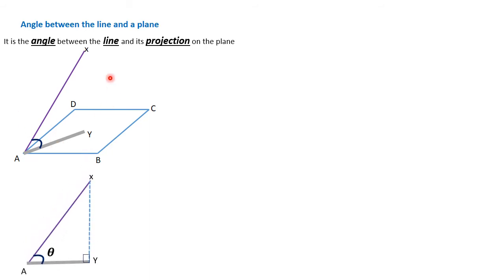The figure we have there presents a right angle triangle. We have AX, which was the line given, and AY, which is the shadow of AX on the plane ABCD. Joining points X and Y completes a right angle triangle. So whenever we talk about the angle between a line and a plane, we are also defining a right angle triangle in the process.